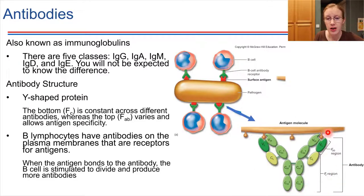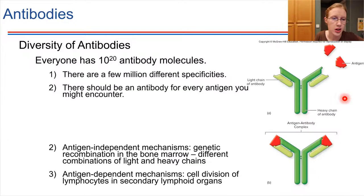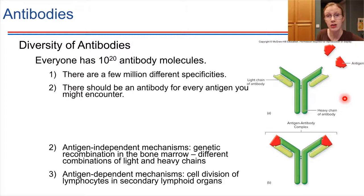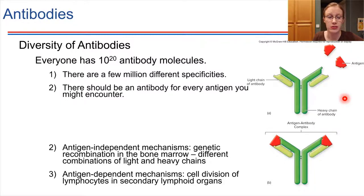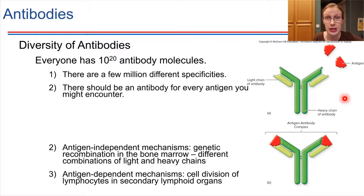We each have a huge number of antibodies — it's estimated that we have 10 to the 20, that's 100 million trillion antibodies, present within our bodies. Some of those are duplicates of each other, but if we categorize how many different types of antibodies we have, there are still a few million different types that can recognize a few million different things. That's a huge amount of diversity, and the idea is that we should have an antibody to deal with every sort of antigen we might encounter.